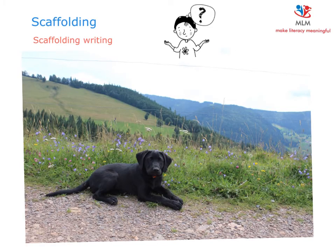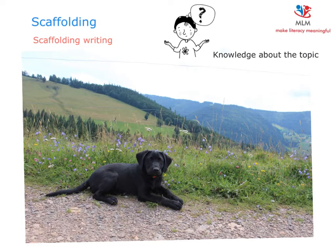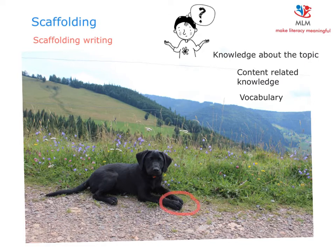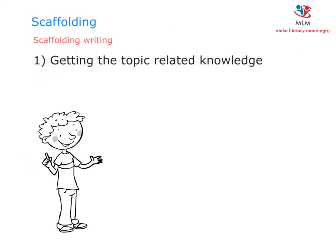You cannot write without knowing something about the topic you want to write about. If you are asked to write a text about a dog, you need to know quite a bit about dogs — you need content-related knowledge. One part of this is specific vocabulary, such as 'paw' or 'snout,' or in German, for example, there is a different word for eating when you talk about animals eating something. Therefore, the first stage of writing should help students get knowledge related to their topic.